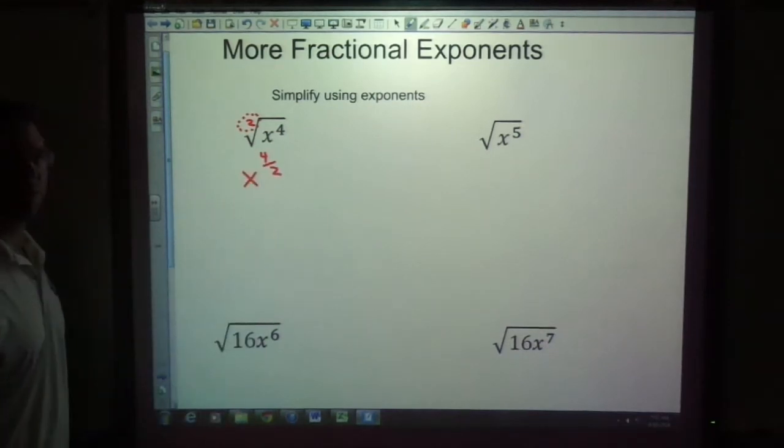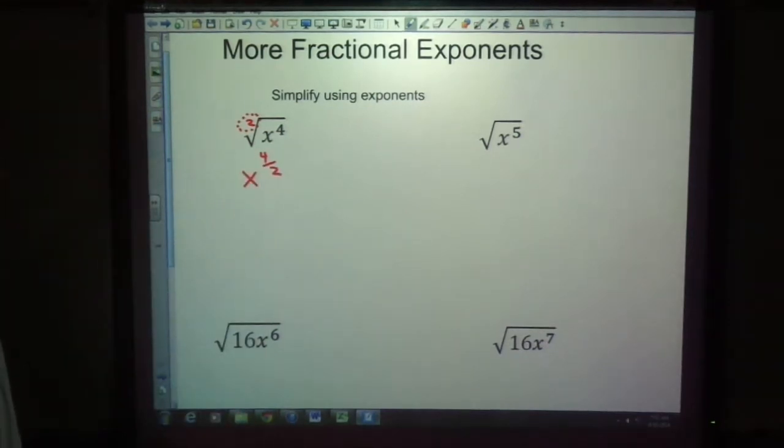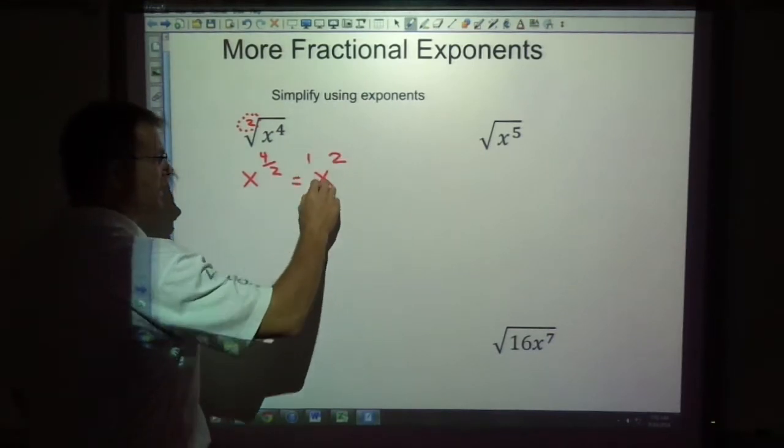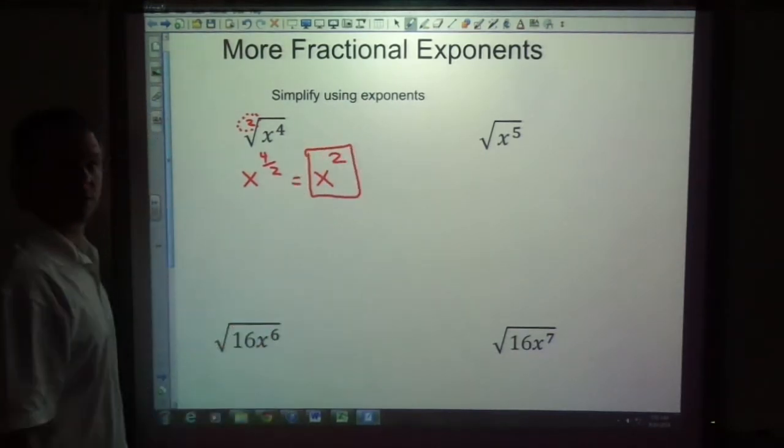But then we want to take a moment and say, wait a second, can I simplify or reduce four over two? What's four divided by two? That is two. So I should write this one as x squared.